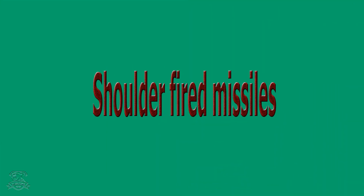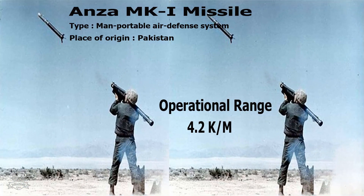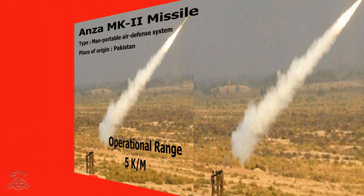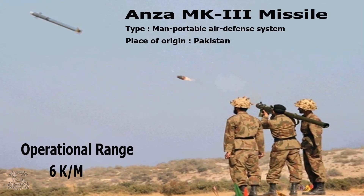Shoulder-Fired Missiles. Onsah Mk-1 Missile: Type – Manportable Air Defense System (MANPADS), Place of Origin – Pakistan, Operational Range – 4.2 km. Onsah Mk-3 Missile: Type – Manportable Air Defense System, Place of Origin – Pakistan, Operational Range – 5 km. Onsah Mk-3 (variant) Missile: Type – Manportable Air Defense System, Place of Origin – Pakistan, Operational Range – 6 km.